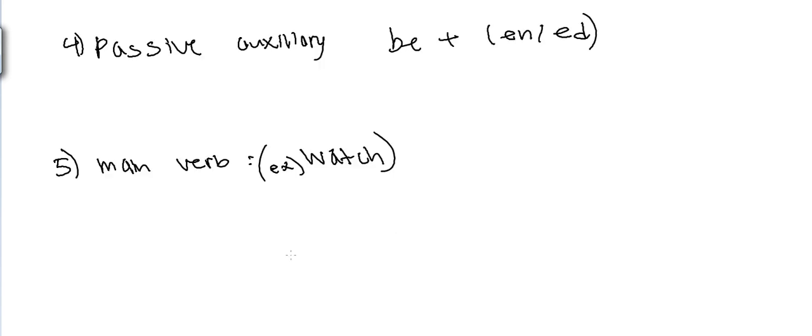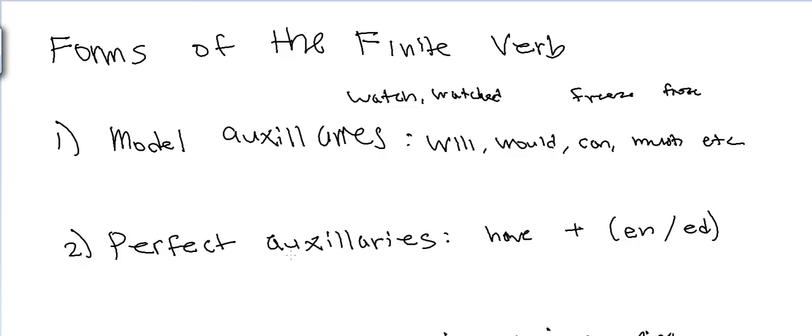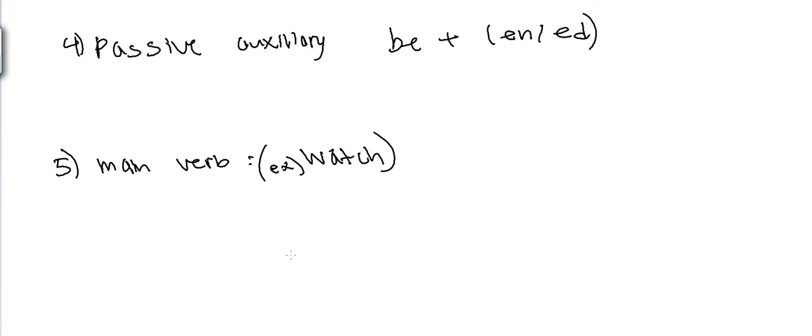The model auxiliary is added to the main verb: may watch, must watch. The perfect, progressive, or passive auxiliary surrounds the next form of the finite verb. Some examples of the surrounding process as follows.